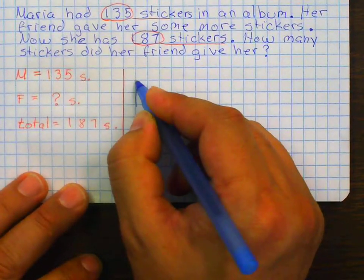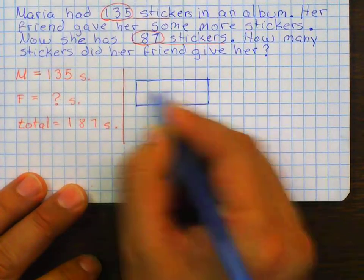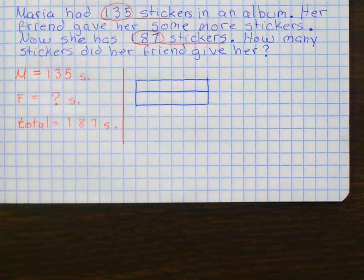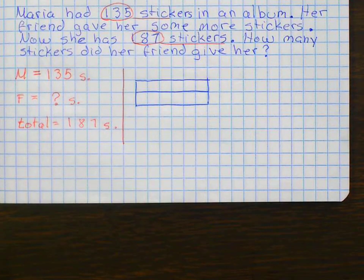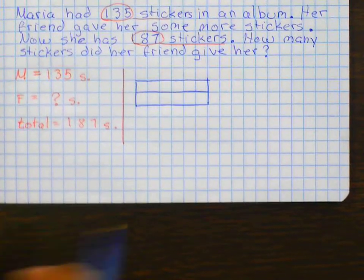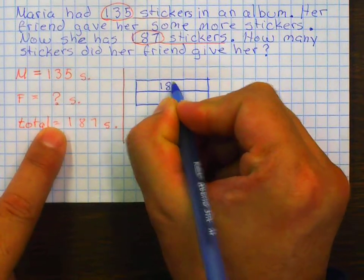In my model, I need to figure it out. Do I know my total? Yes. What's my total? 187. 187. That's the total, because that's how much she has now.